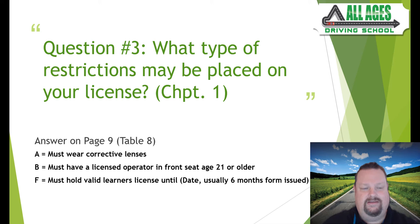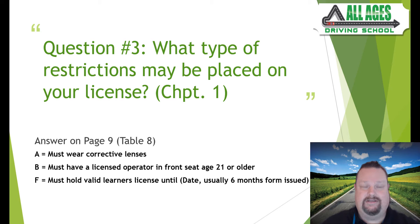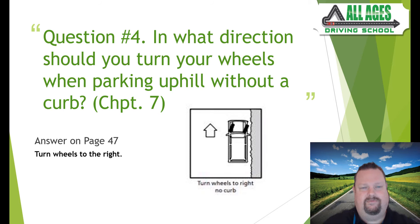Question number three: what type of restrictions may be placed on your license? From table eight on page nine, the restrictions most likely to affect teens are A, B, and F. A means must wear corrective lenses. B means must have a licensed operator in the front seat who is 21 or older. F means you must hold that learner's license for at least six months — so six months from the day you get your permit is the soonest you can get your provisional license as a teen. If you're 18, restriction F doesn't apply.